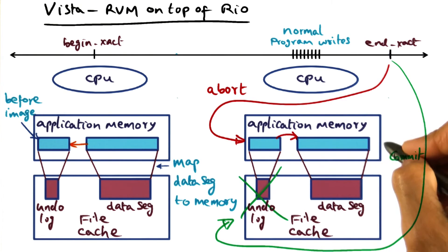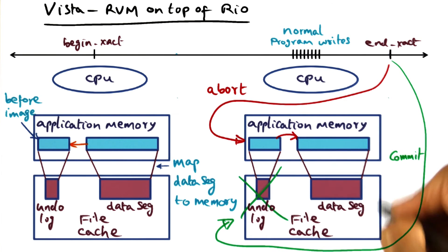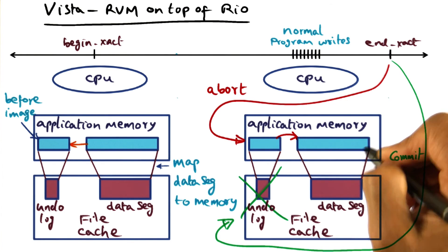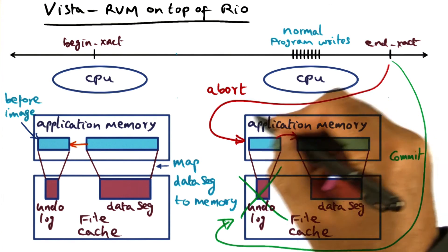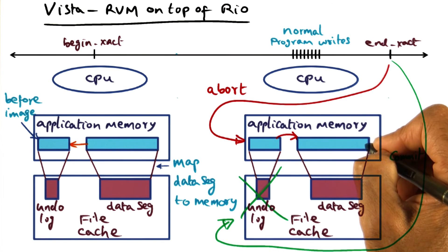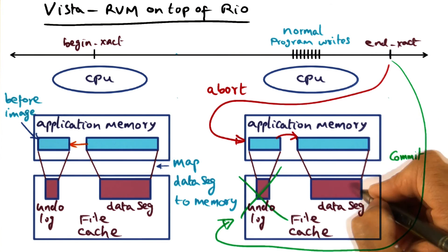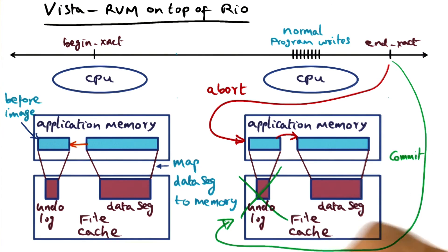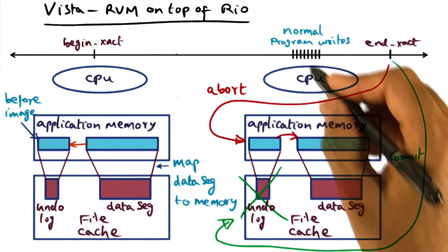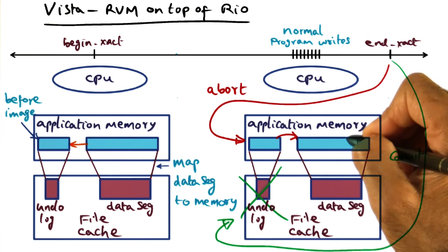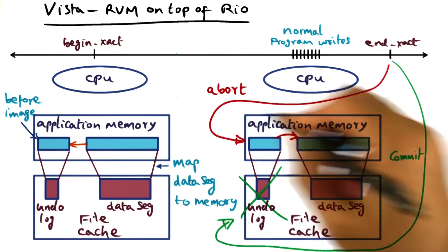This picture shows the virtual address space of the process, where the physical memory is used as a battery-backed file cache, and a portion of the virtual address space is mapped into this battery-backed file cache. The rest of the application's address space does not need persistence and can reside in normal physical memory. Only the portion of application memory requiring persistence — through the data segment — needs to be mapped to the battery-backed region. To recap: at end transaction, if it's a commit, no work is done except discarding the undo record. If it aborts, restore the old image back into virtual memory, and you're back as though the transaction never happened.